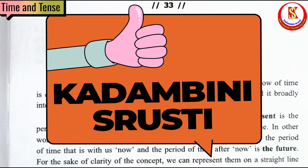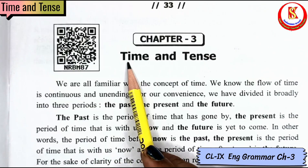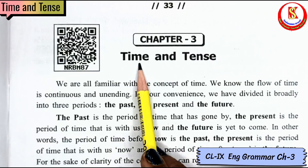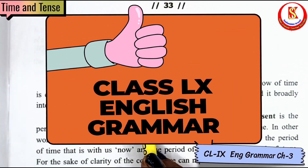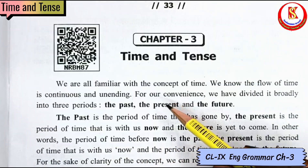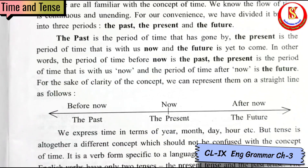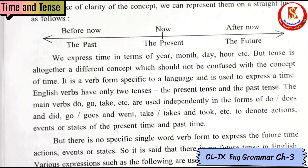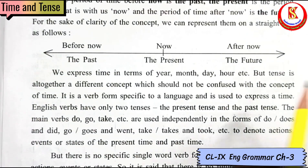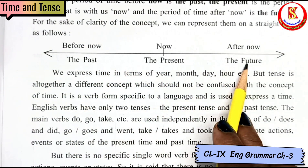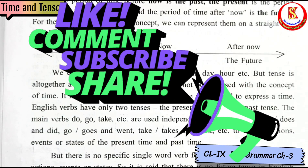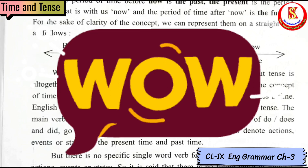Hello dear students, welcome back to Kadambini Srishti. In this video we are going to learn all the activities of Chapter 3, Class 9 English Grammar, that is Time and Tense. So let us quickly start all the activities one by one.